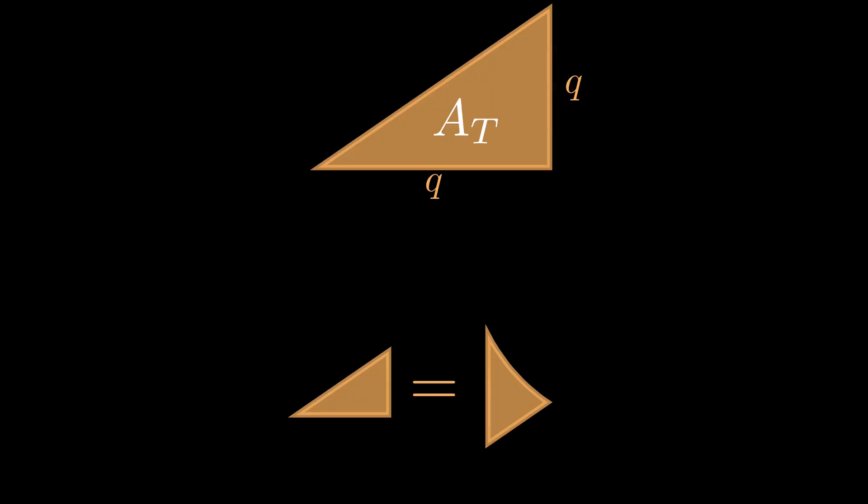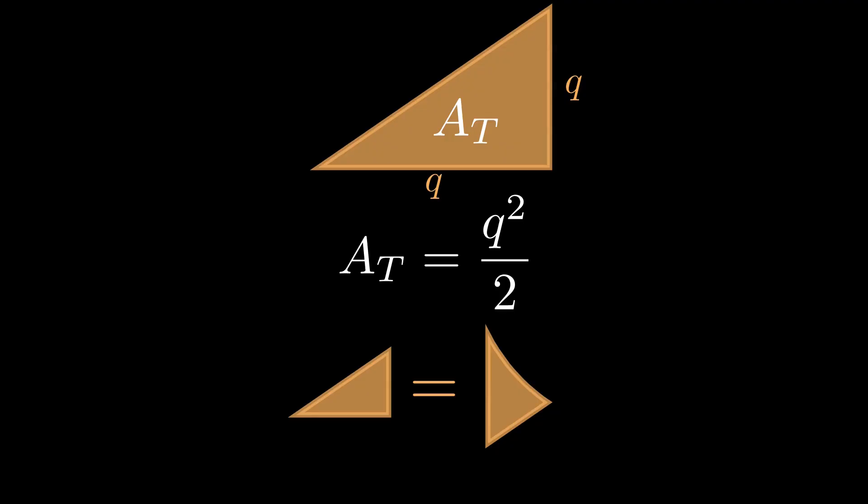We also know that the height of the triangle must be q, since the height is defined by the function y equals x, so the height must have the same value as the base. The formula for area of a triangle is base times height divided by 2. We can rewrite this as q squared over 2. We will set this result to the side for later.